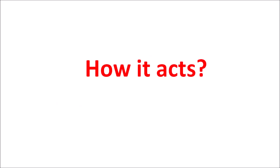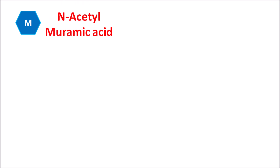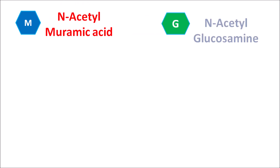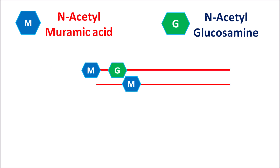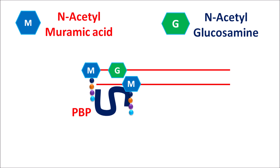First, let us see how this drug acts. The cell wall of bacteria is made up of two important units: N-acetyl muramic acid and N-acetyl glucosamine. These two building blocks are arranged alternately to produce each layer of the cell wall. Muramic acid is attached with a pentapeptide chain, where one terminal peptide is removed during cross-linking, leaving four amino acids in the peptide chain.